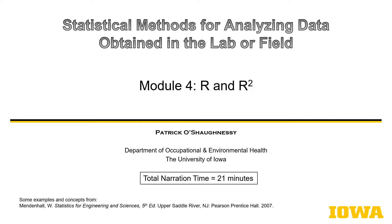This is Patrick O'Shaughnessy, and this is the fourth module in the series Statistical Methods for Analyzing Data Obtained in the Lab or Field. In this module, we will advance our understanding of the strength of association of the regression model by calculating an r-squared value and understanding the difference between r-squared and r.